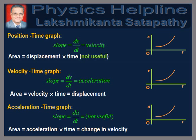Now, for the graphs in kinematics. Position-time graph: time t and position x are taken along the x-axis and y-axis respectively. Therefore, slope = dx/dt, which gives velocity, and area = displacement × time, which is not useful in physics. Velocity-time graph: time t and velocity v are taken along the x-axis and y-axis respectively. Therefore, slope = dv/dt, which gives acceleration, and area = velocity × time, which gives displacement. Acceleration-time graph: time t and acceleration a are taken along the x-axis and y-axis respectively. Therefore, slope = dA/dt, which is not useful in physics, and area = acceleration × time, which gives the change in velocity.